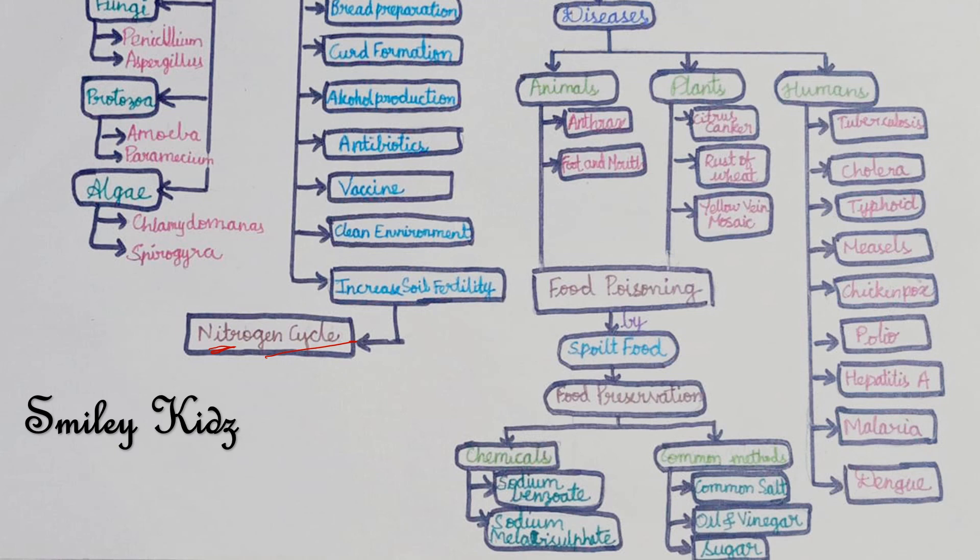then animals eat plants. When animals excrete or they die, they produce nitrogenous waste. Then bacteria turns these compounds of nitrogen into gaseous nitrogen. That is why nitrogen is constant in the atmosphere. This is all about nitrogen cycle.